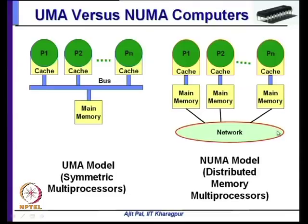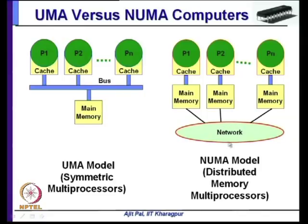You can also have non-uniform memory access (NUMA), where main memory is distributed. When a processor accesses its own local memory, access time is smaller, but when it accesses memory attached to another processor through an interconnection network, the access time is longer and variable. This is the distributed memory multiprocessor model, where different memories are attached to different processors and accessed through an interconnection network or local area network.